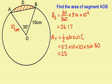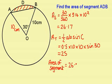To find the area of the segment now, I just need to take this away from this. So the area of the segment is 26.17 take away 25, which is 1.2 to one decimal place. Because it's an area, the units are centimeters squared.